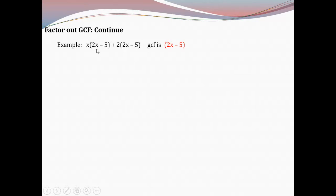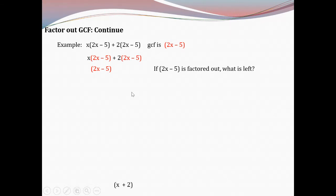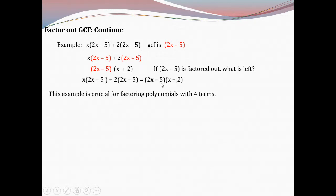Continuing with factoring out the GCF: we have the expression X(2X − 5) + 2(2X − 5). What do these two terms have in common? The GCF is the binomial (2X − 5) because both terms share it. So if I factor out (2X − 5), what's left is (X + 2). The answer is (2X − 5)(X + 2). This example is crucial for factoring polynomials with four terms, which I'll explain later.